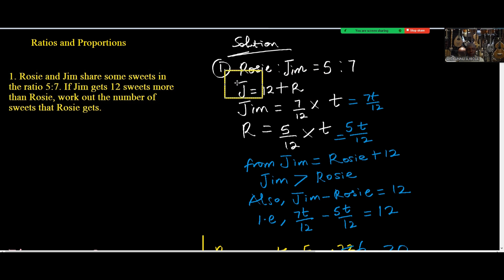We can see from the first statement that Jim is greater than Rosie because Jim equals Rosie plus 12. So we can find the difference between Jim and Rosie. The difference between these is going to be 12 based on the information given.